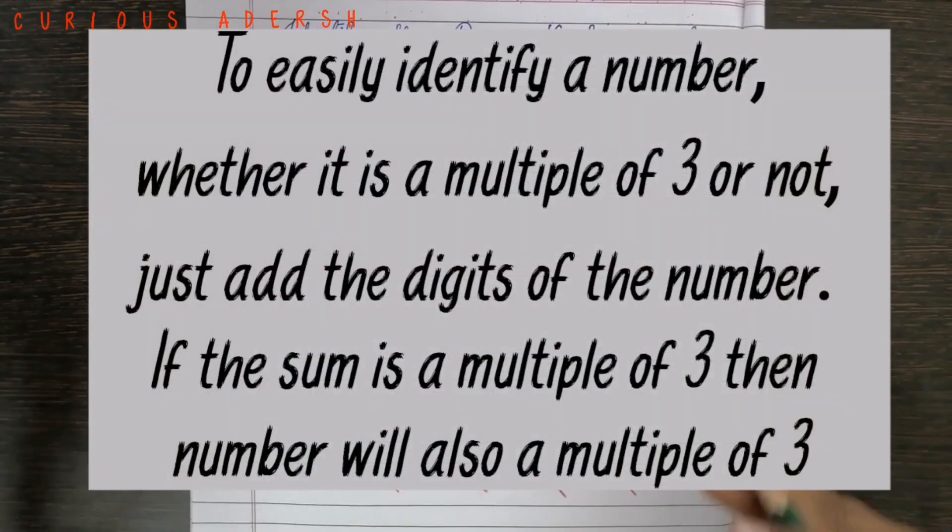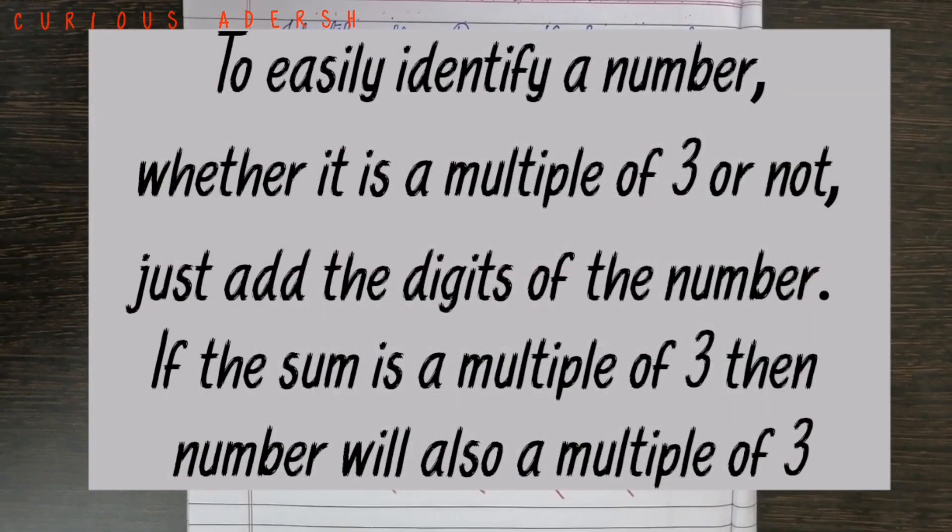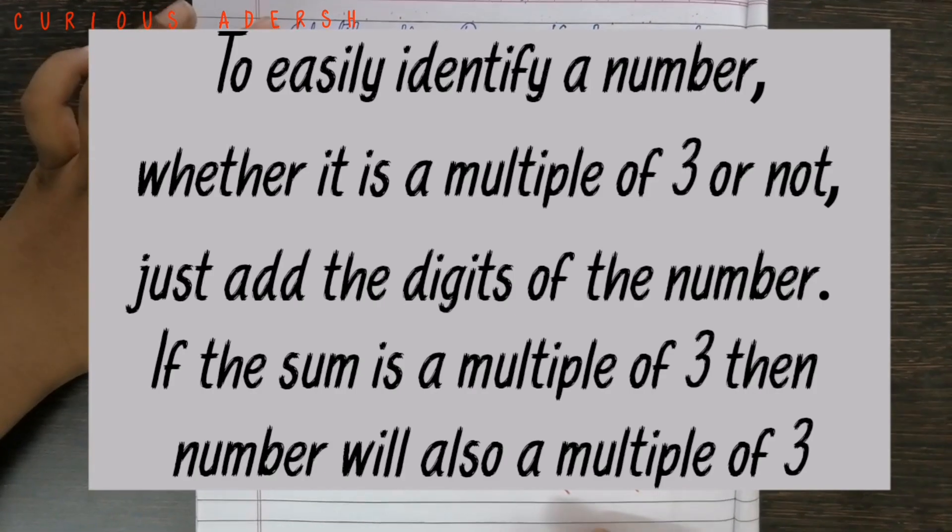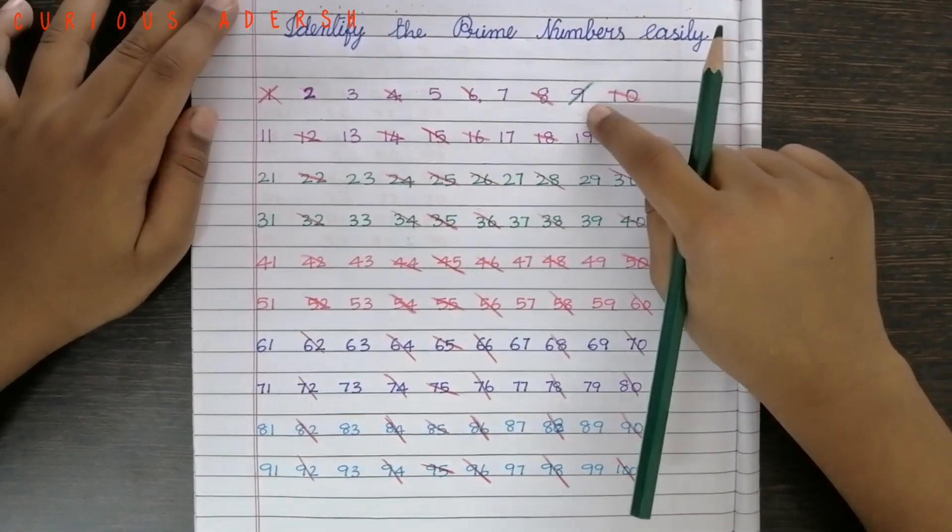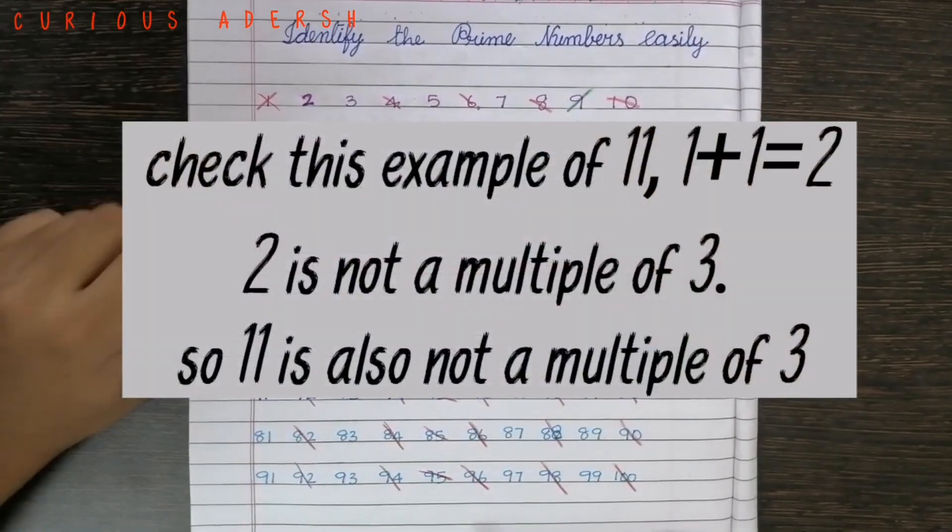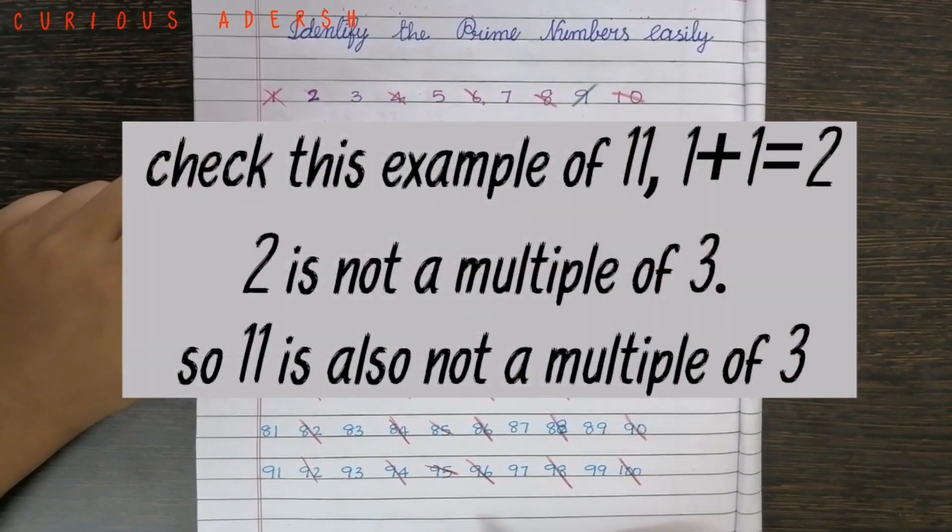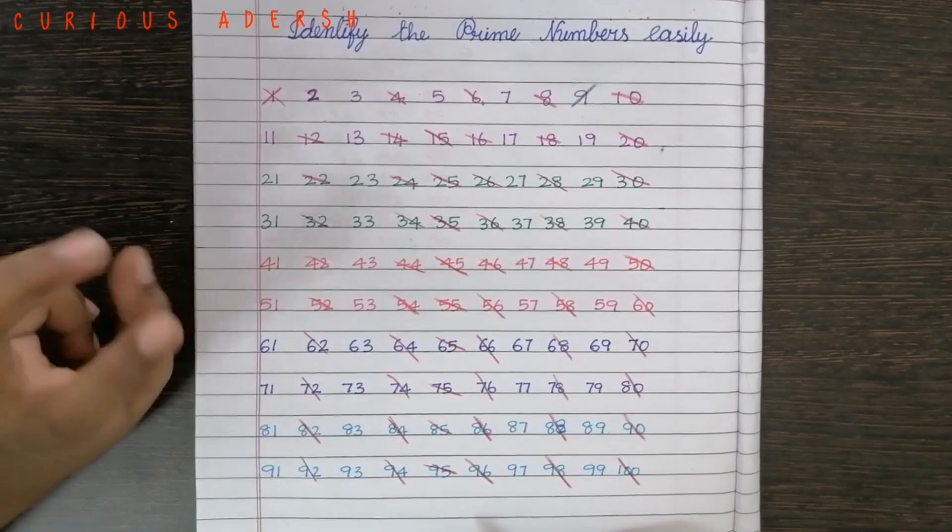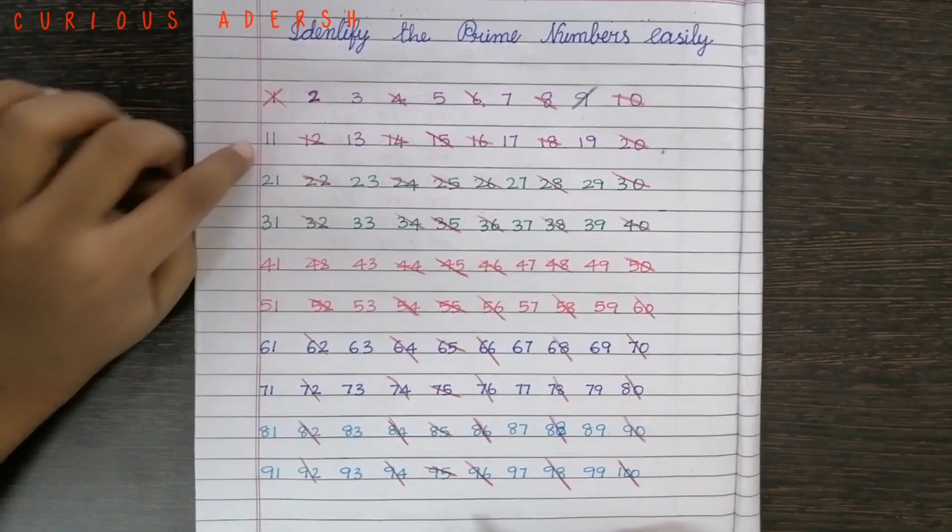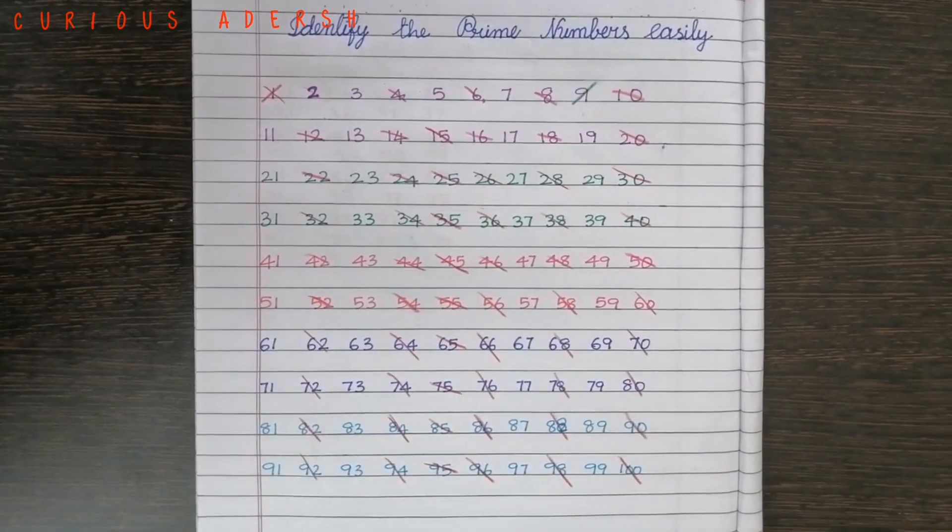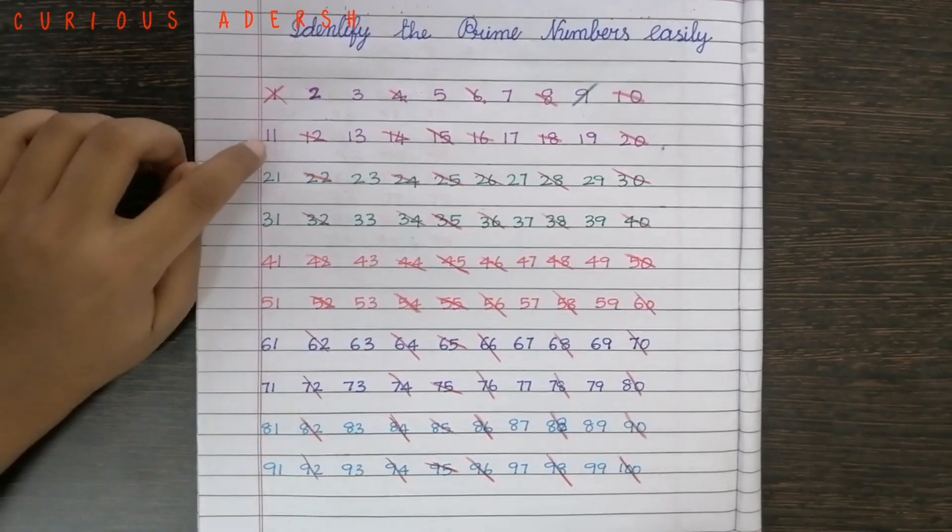Let's move to the next step. In this step we'll cancel the multiples of 3 except 3. We know that 9 is a multiple of 3 so we'll cancel it first. Let's move to 11. 1 plus 1 is 2. 2 is not a multiple of 3. 11 is not a multiple of 3 either. So we'll leave it.